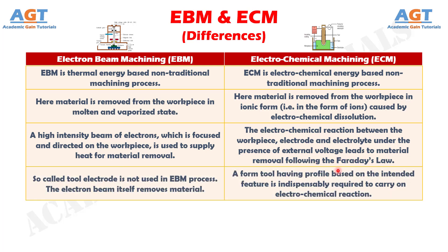Number 4: A so-called tool electrode is not used in the electron beam machining process. The electron beam itself removes material, whereas in electrochemical machining, a form tool having a profile based on the intended feature is indispensably required to carry on the electrochemical reaction.